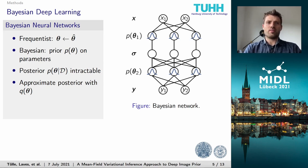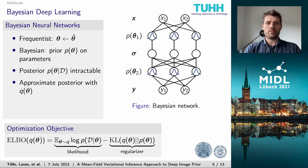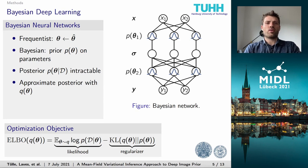We can approximate this intractable posterior with a simpler distribution q(θ) from a tractable family of distributions, for example a Gaussian. This is known as mean field variational inference, where we assume each weight is independent of the other. Variational inference is about bringing the distributions of the approximate and true posterior closer together, which is not solvable by optimization directly. But we can turn the problem into an optimization one by utilizing the log evidence lower bound, or ELBO for short, which can be seen at the bottom of the slide.